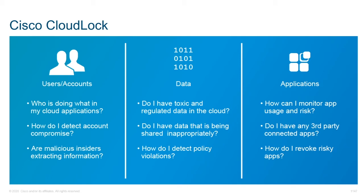This leads us to Cisco's CloudLock. It's technically considered out-of-band and uses those APIs. If you're curious about what is supported, there's a list of approved vendors on Cisco's website. We can look at things like user accounts, who's doing what in our cloud applications, detect malicious insiders, determine if an account is compromised, identify any toxic data, check if everything is being shared appropriately, monitor app usage and risk, and revoke any risky apps.